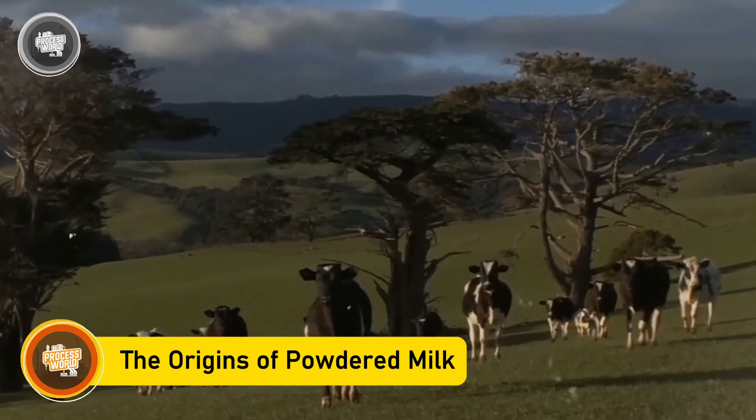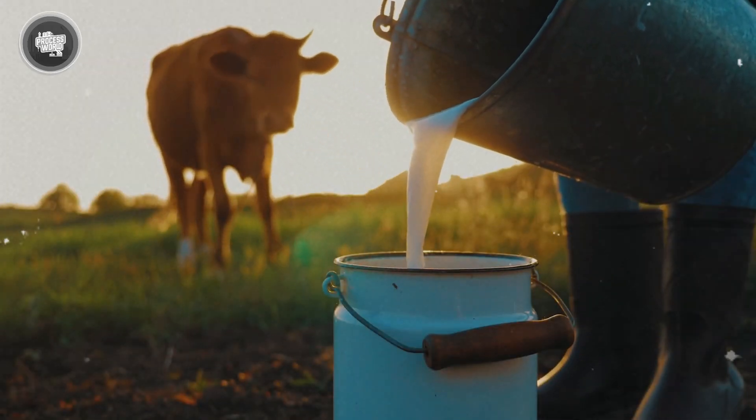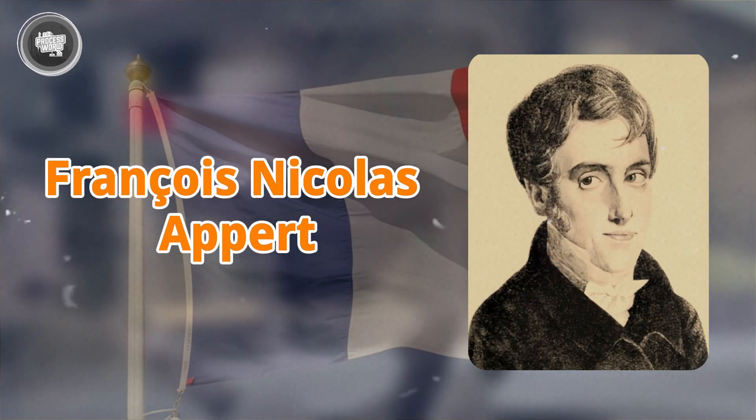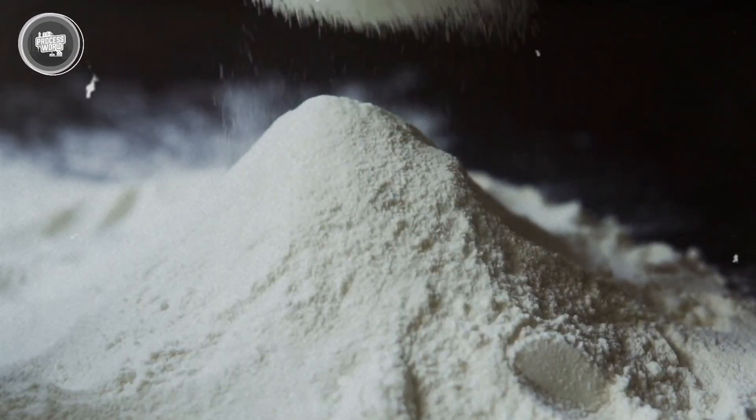Milk has been a daily essential for centuries, but keeping it fresh was once a major challenge. In 1802, French chemist Francis Nicolas Apert discovered that drying milk made it last much longer, which was a game-changer for soldiers and people in remote areas.